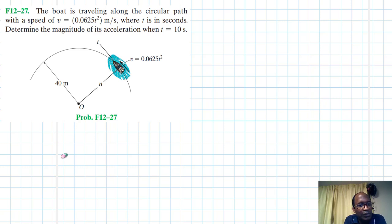The problem reads: the boat is traveling along the circular path with a speed of v equal to 0.0625 t squared meters per second, where t is in seconds. Determine the magnitude of its acceleration when t is equal to 10 seconds.